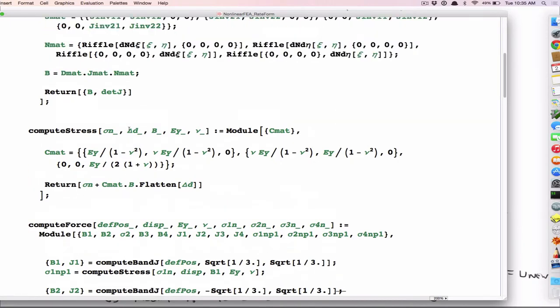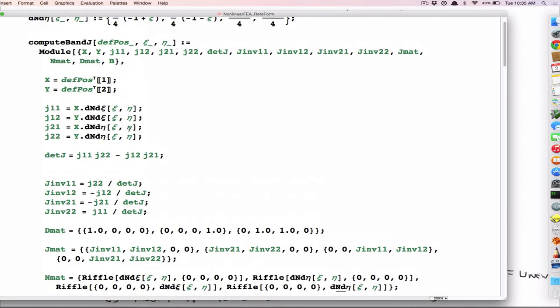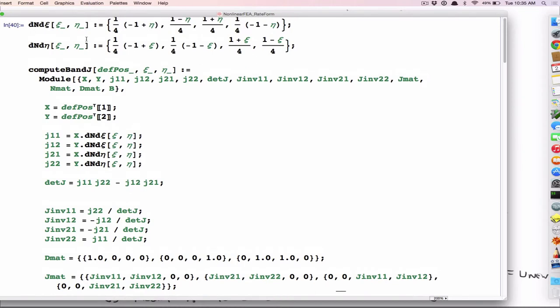But, other than that, the one last little detail I want to point out, B, the strain displacement relations. Those derivatives are computed with respect to the reference configuration coordinates. Now, if you remember back when I, at the very beginning, we were talking about theory, and we talked about rotation and finite strains. Here, this B is like a Lagrangian strain measure. So it references back to the reference configuration.